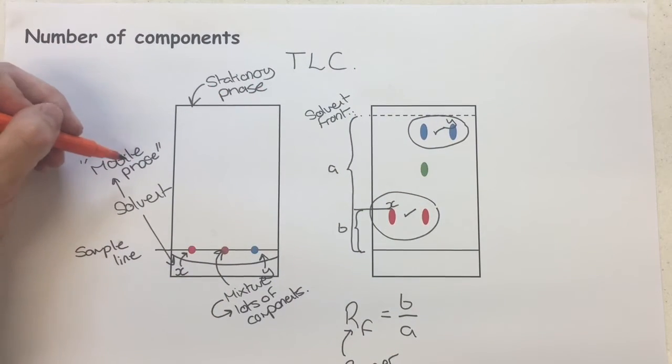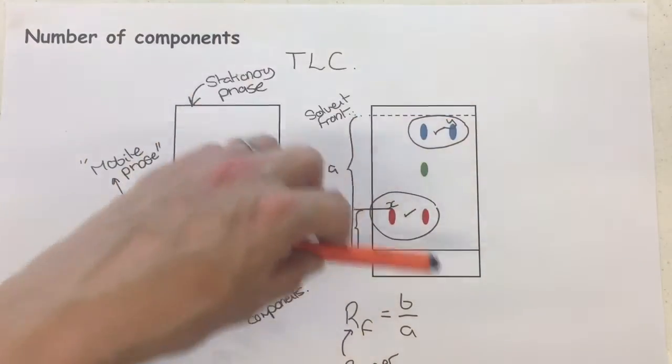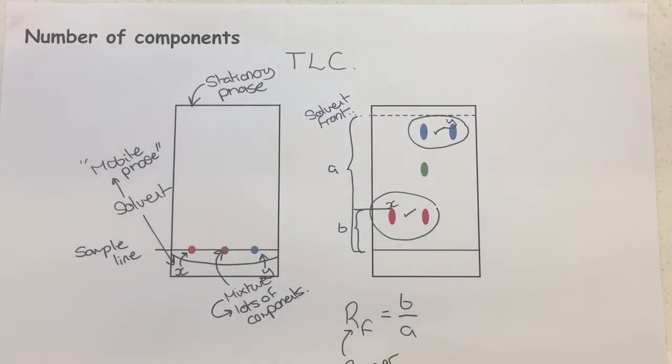The suggestion would be that Y would be very soluble in the mobile phase. Because as the solvent went up, Y went with it, which means it must be soluble in it, because it's able to travel with it all the way up the plate.